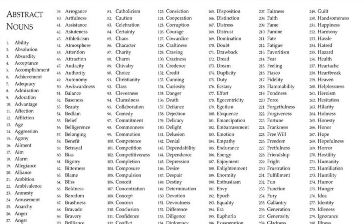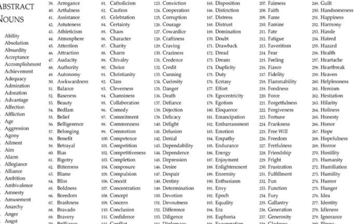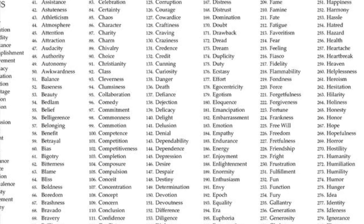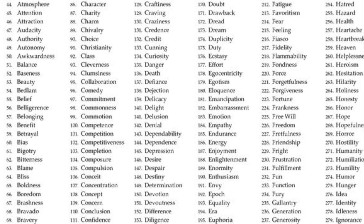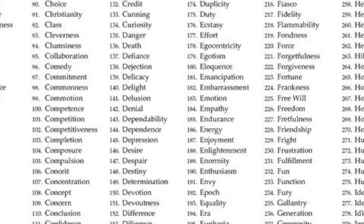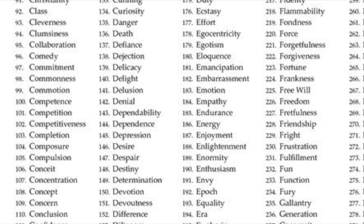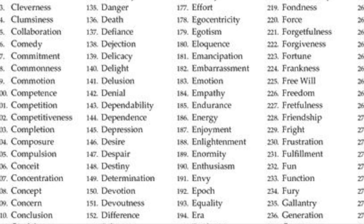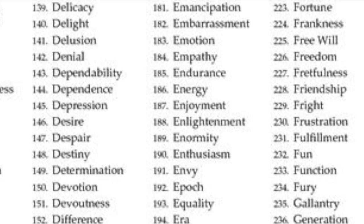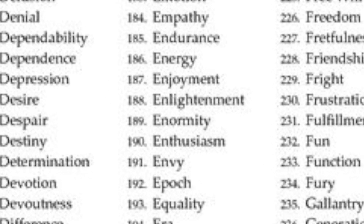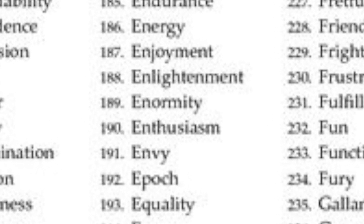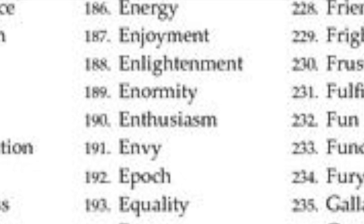Here is a list of abstract nouns. We can see words like belief, commitment, delight. We need to focus on some of those words when we write our paragraphs — words like enlightenment or enthusiasm — and then use our examples and our concrete nouns to describe what this looks like with examples from the text.